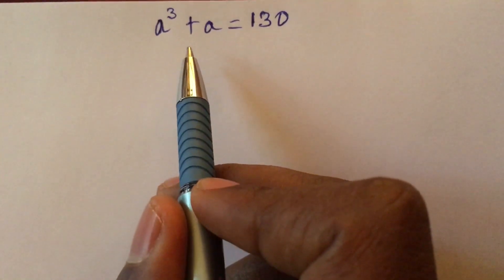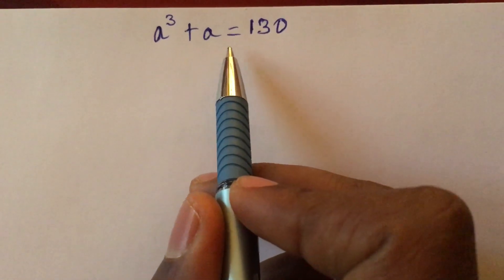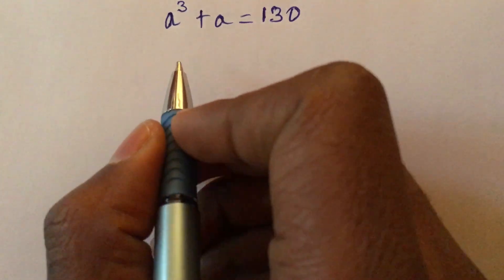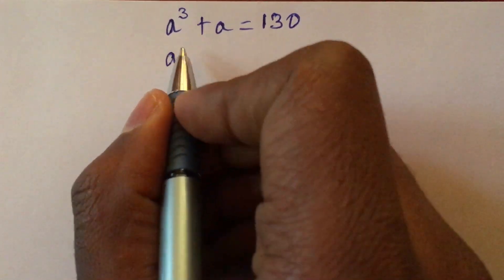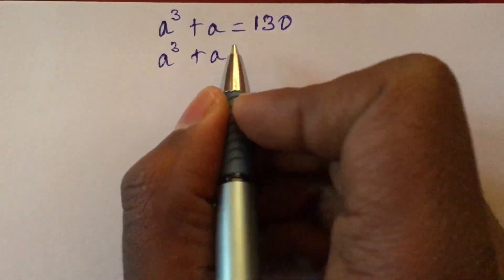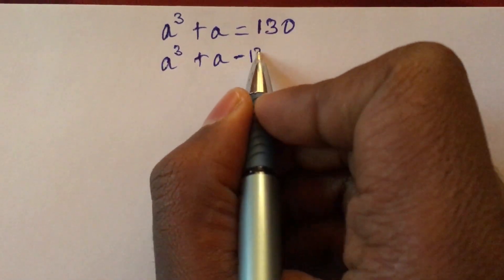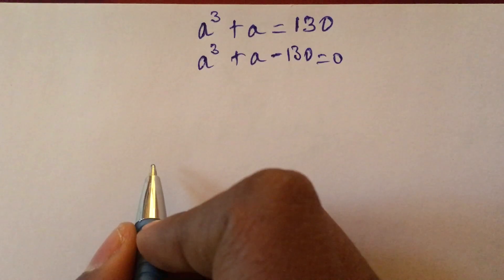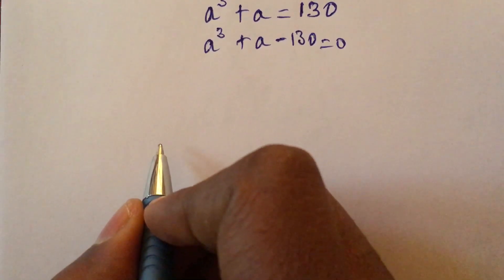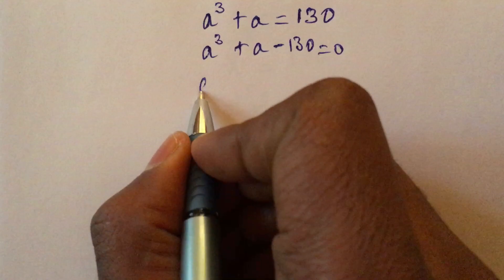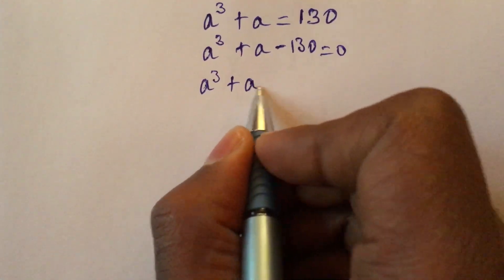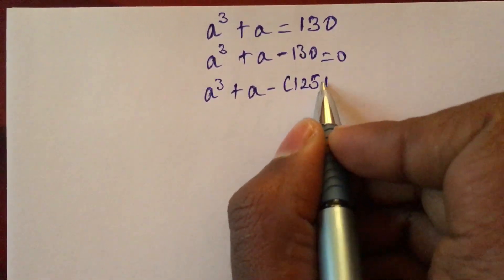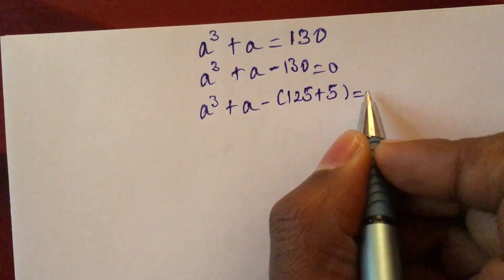Given the equation a cubed plus a equals 113, we need to solve it. Rearranging: a cubed plus a minus 113 equals 0. Next, we rewrite 113 as 125 plus 5, giving a cubed plus a minus 125 minus 5 equals 0.